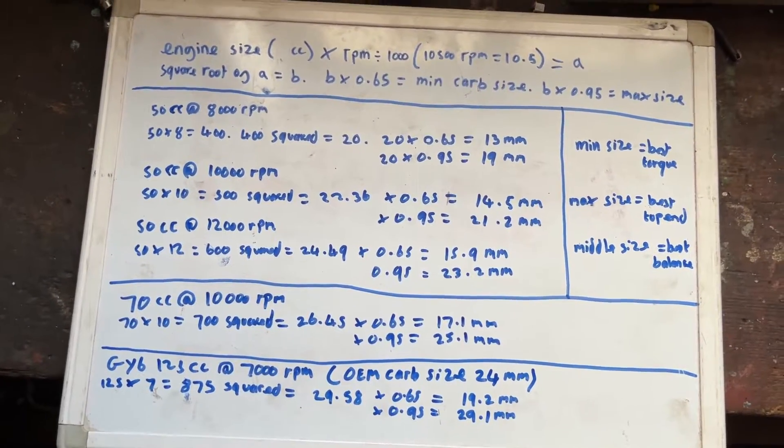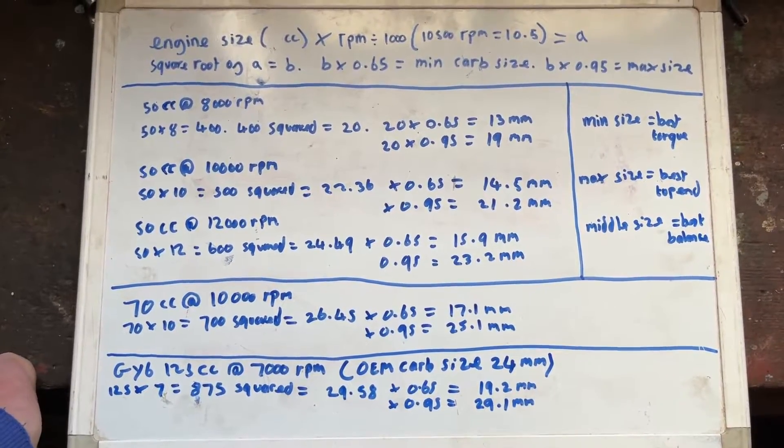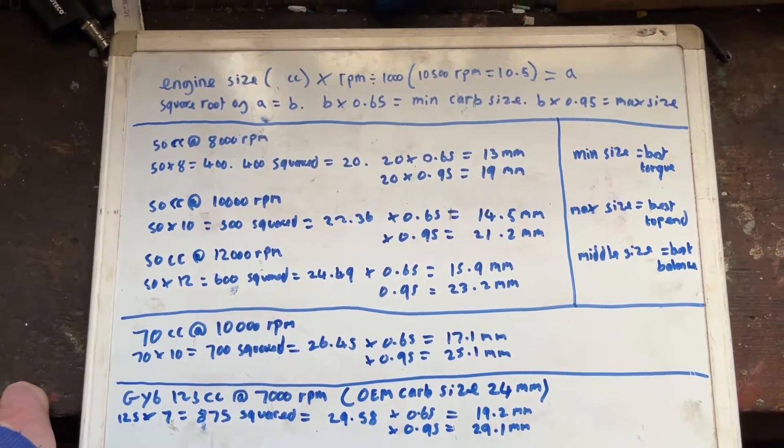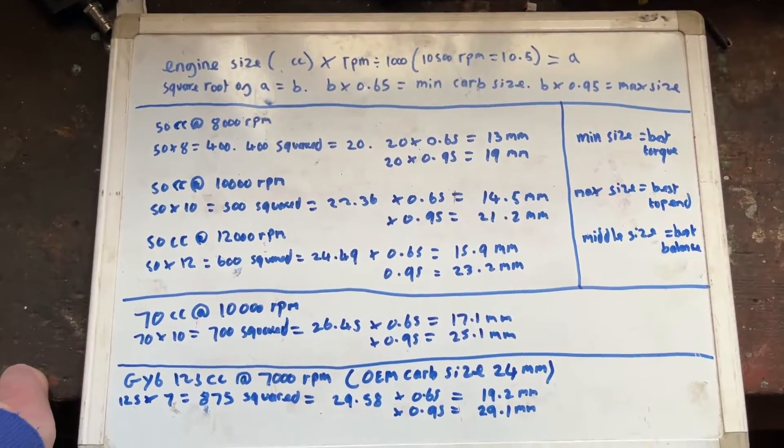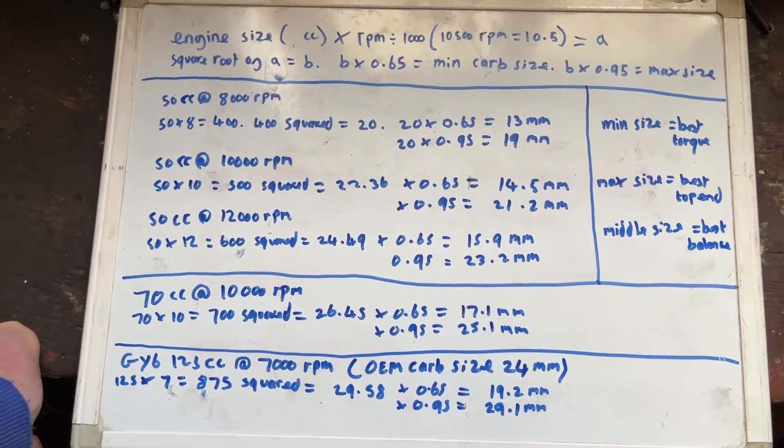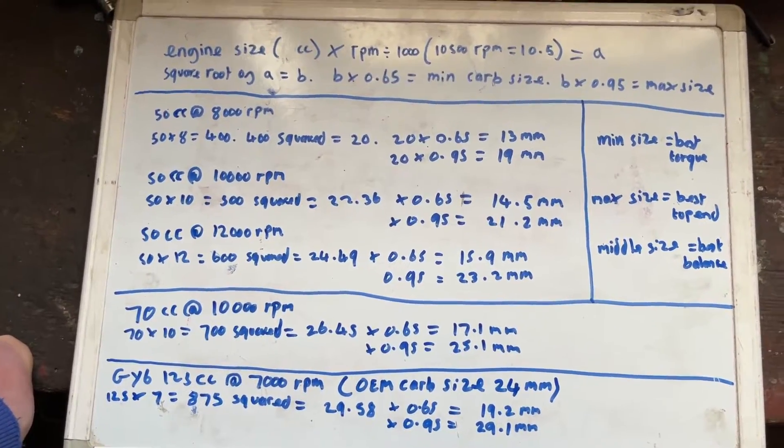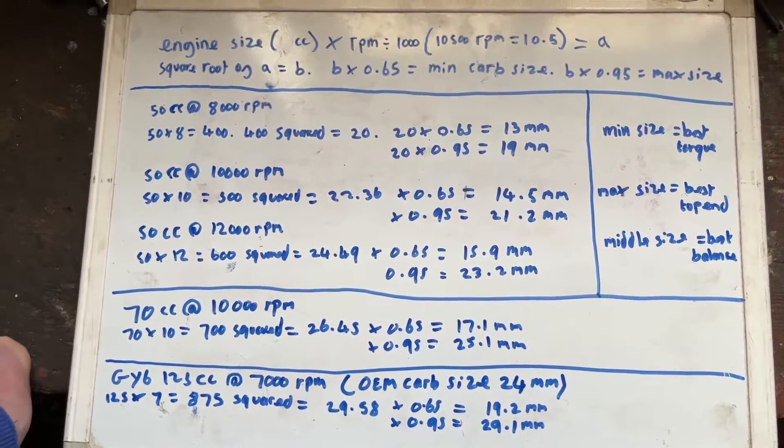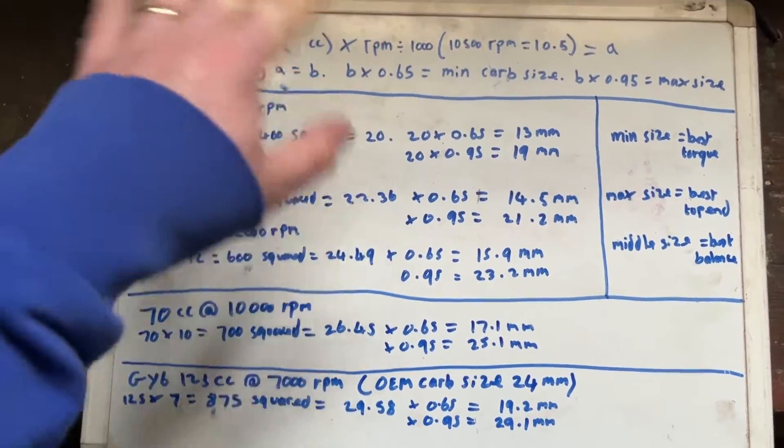Otherwise you're just going to have to do a little bit of research and work out what your RPMs are. Another thing, if you're into porting cylinders and stuff like that and modifying the cylinders yourself, really the only way I can think of working out the max RPM would be dynoing it. But it's better if you can, if you've got like a standard big bore kit or something and you can get the information from the manufacturer, that's great.